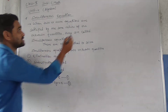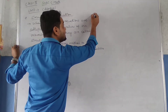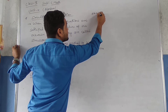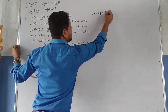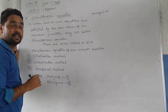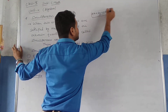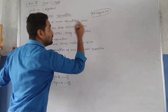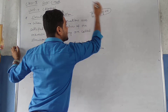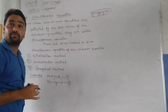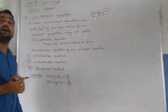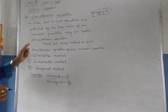A simultaneous linear equation can be written in the form: AX plus BY plus C equals to 0. This is the standard form of the simultaneous linear equation, where A, B, and C are constant numbers, and X and Y are two variables.